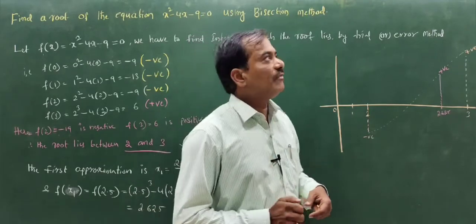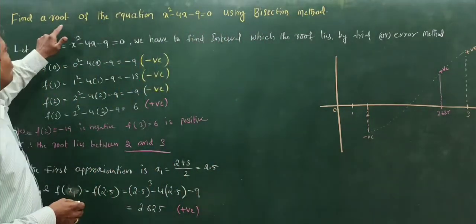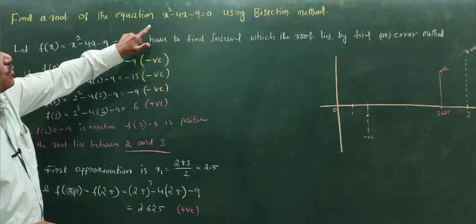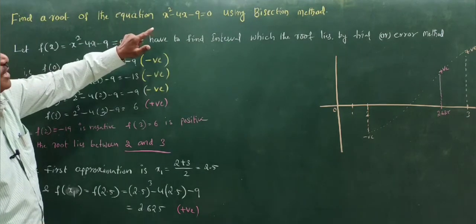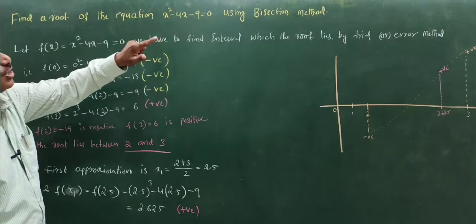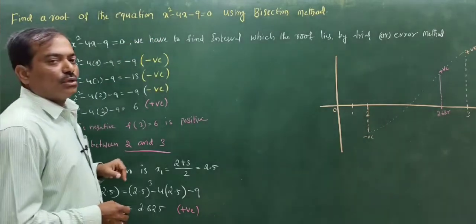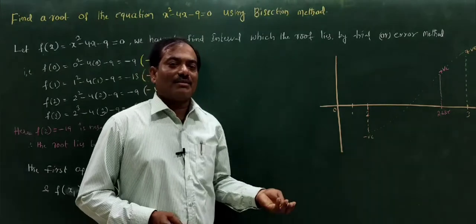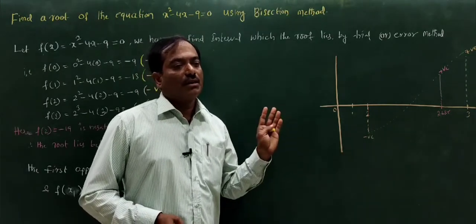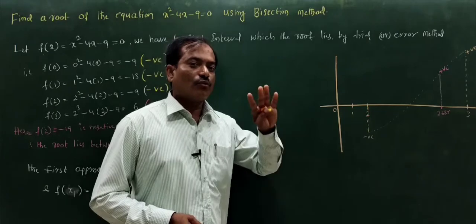The given problem is: find a root of the equation x³ minus 4x minus 9 equal to 0 using the bisection method, correct to 4 or 5 decimal places — meaning we take 4 digits after the decimal point.